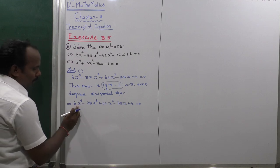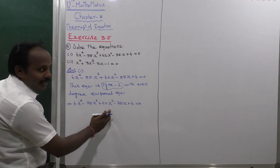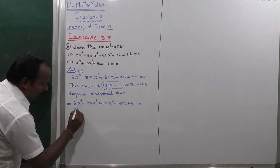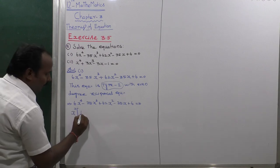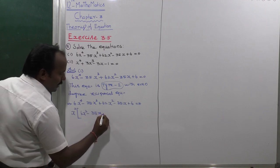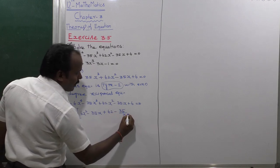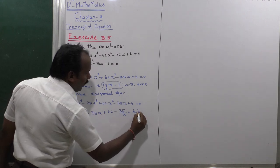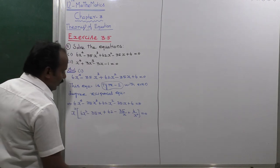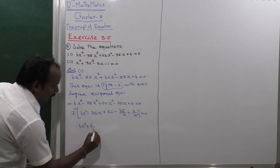So, dividing through by x² — since x² is a common factor — we get: x² into (6x² minus 35x plus 62 minus 35 divided by x plus 6 divided by x²) equals 0. Rearranging: 6x² plus 6/x² minus 35x minus 35/x plus 62 equals 0.